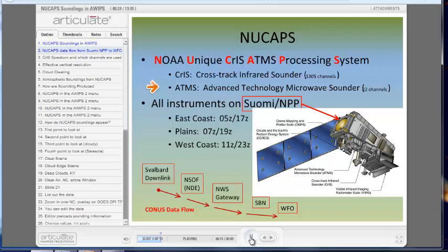These are two instruments onboard Suomi NPP, a polar orbiter with an orbit such that it scans the East Coast around 5Z and 17Z, the Plains around 7Z and 19Z, and the West Coast around 11Z and 23Z.